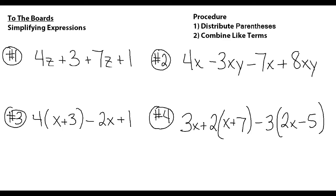Hello and welcome back to the boards. It's time for you to practice some simplifying expression questions. There is a two-step procedure: first, distribute into the parenthesis if you have any; then combine like terms — x's with x's, y's with y's, z's with z's, numbers with numbers. Go ahead and pause the video now and try these four problems. When you're done, unpause and we'll work through them together.